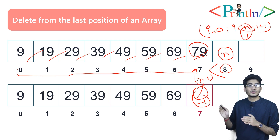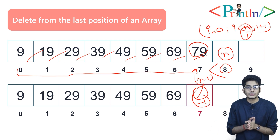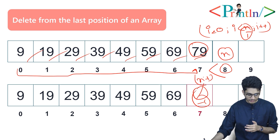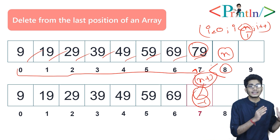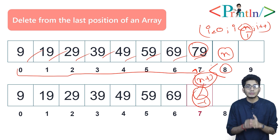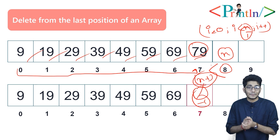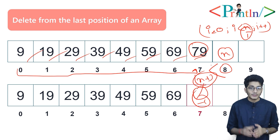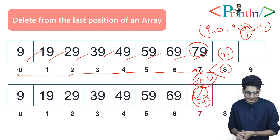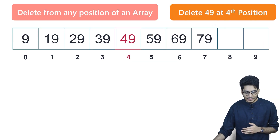You may or may not replace that 79 with zero — that is up to you — but you have to traverse up to n minus one. Whenever you are deleting any element from an array, you have to traverse up to n minus one. This is how you can remove any element from an array. Here we are talking about the last position.